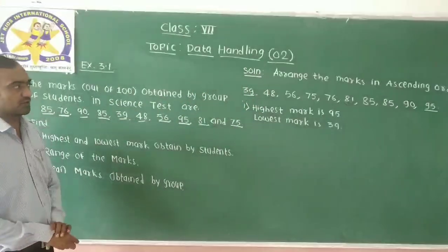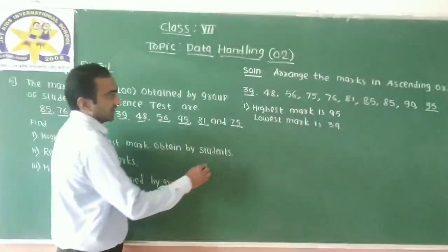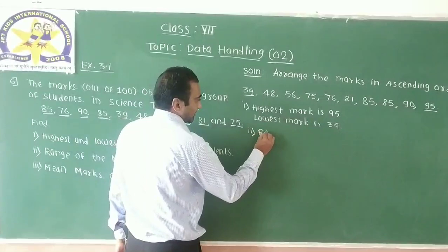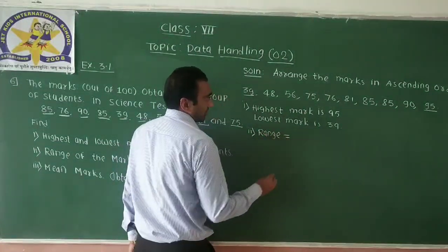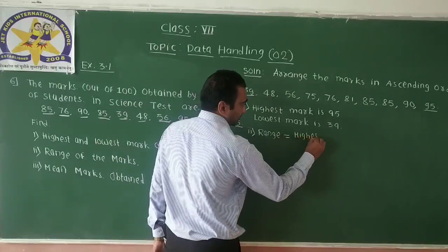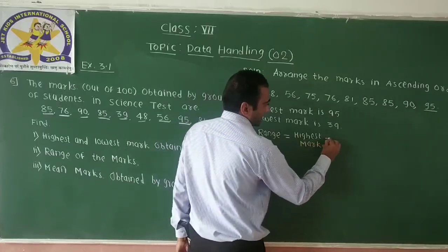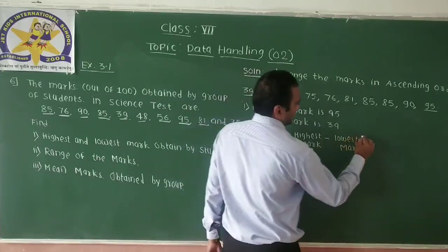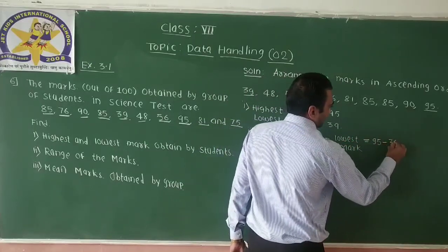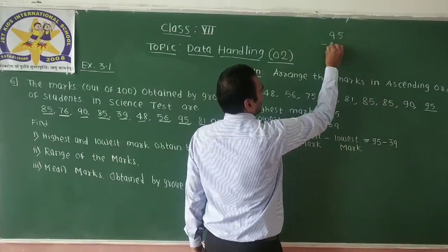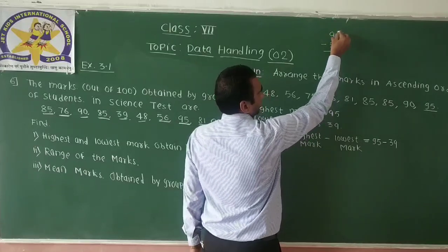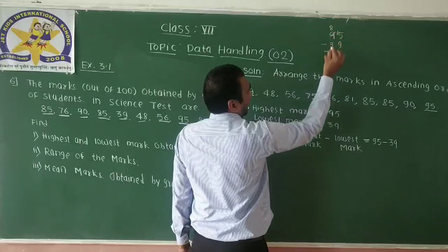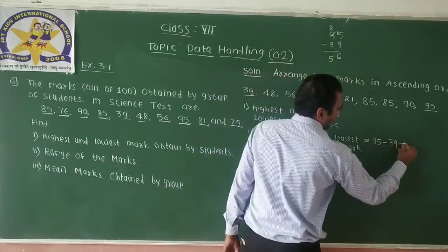The second question asks for the range. Range equals highest mark minus lowest mark. Highest mark is 95, lowest is 39. So range equals 95 minus 39. Calculating: 15 minus 9 is 6, and 8 minus 3 is 5. Therefore the range is 56.